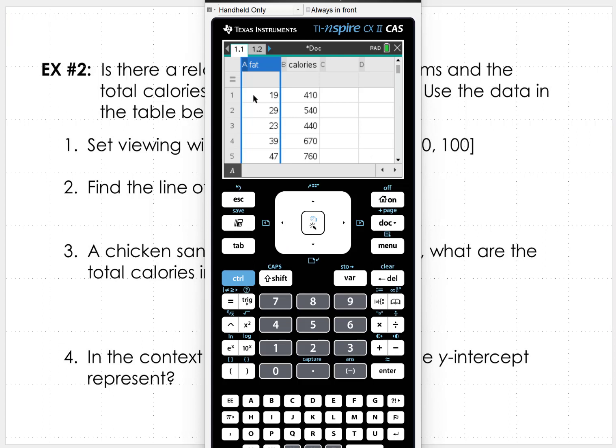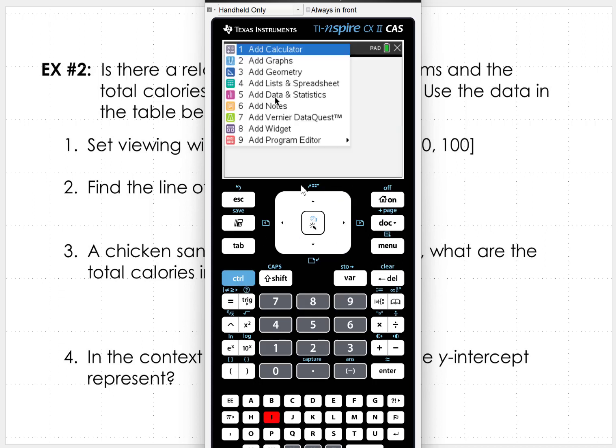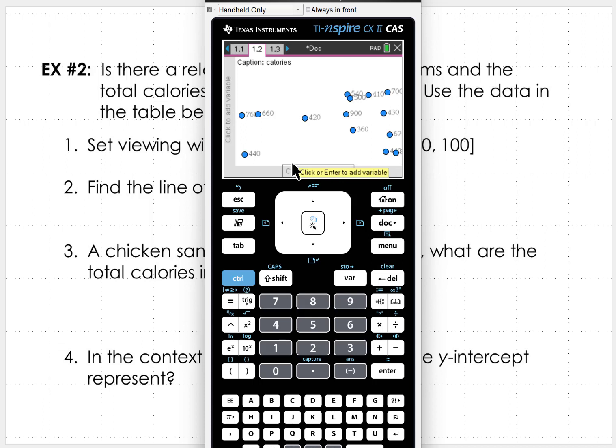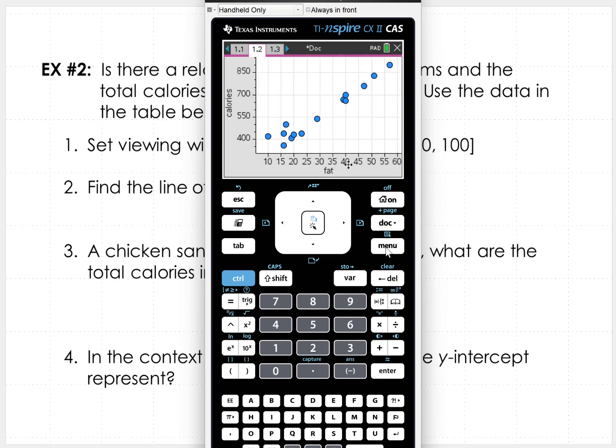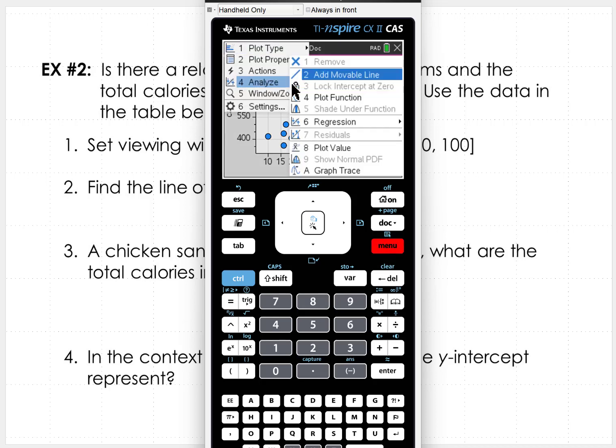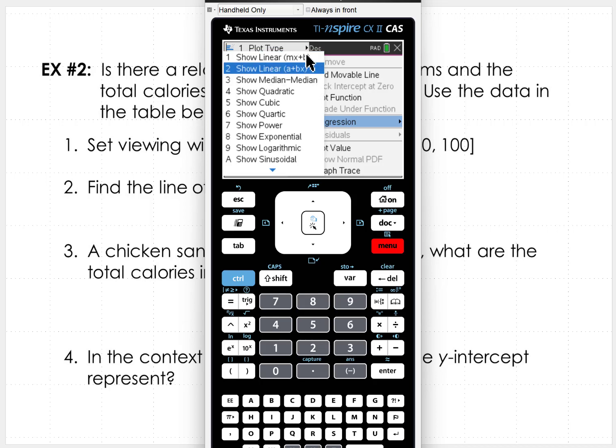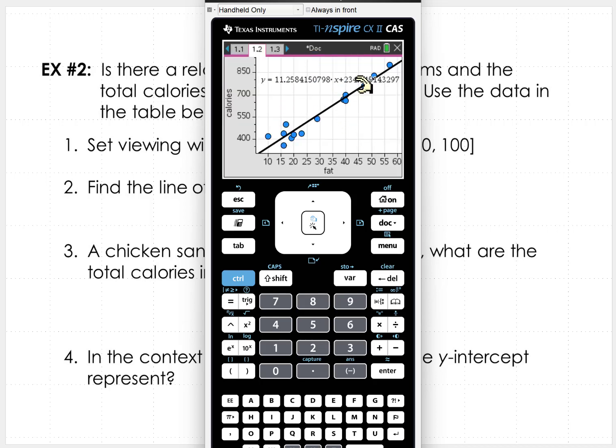So I've preset my calculator to be the fat grams in column A and the total calories in column B. And we have I believe 16 data points, 14 data points. And then when you do control and I and enter data and statistics, scrolling on the x-axis we want the fat. Scrolling on the y-axis we want the calories. And then go to menu, analyze, regression. And we want a linear regression. So here's our regression equation: 11.258x plus 234.745.